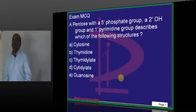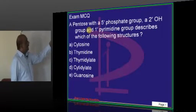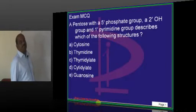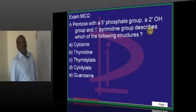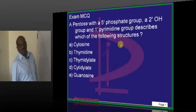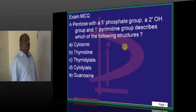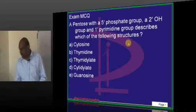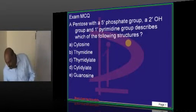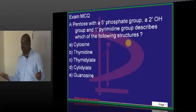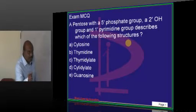Now, take up an MCQ doctor. We don't want you to sleep in the class. A pentose with 5-phosphate group, 2-OH group, 1-pyramidine group describes which structure out of these. You like to call nucleoside or tide and if so, what is pyrimidine? You must know all these things to answer this question. Give me a quick answer doctor. Yes. Give me. Online students also, please punch your answers. Let us make it a more interactive session. I am very happy to see 30 plus viewers online today. Yeah, that makes my evening wonderful today. Yes doctor. You like to say?